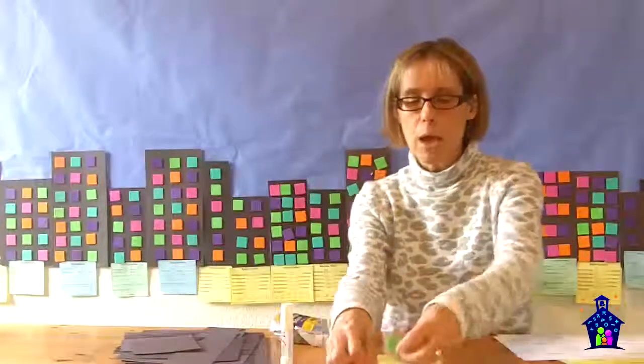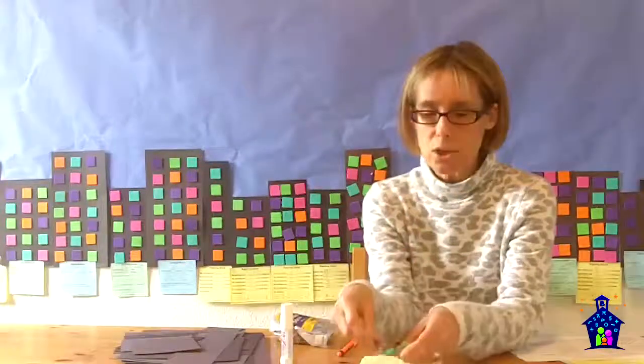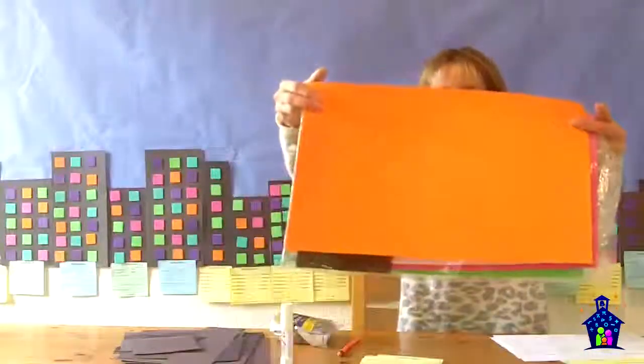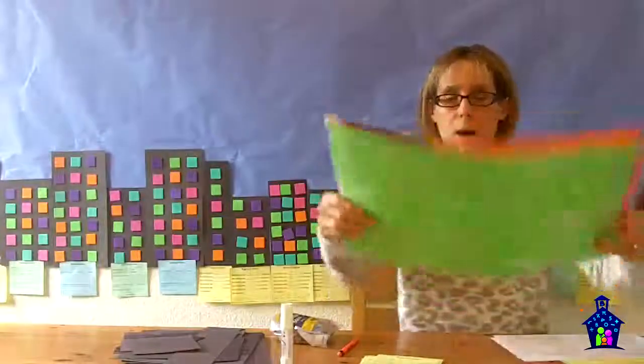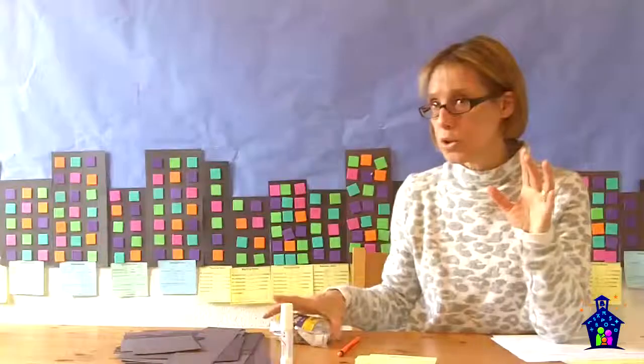What you're going to need for this project is a whole bunch of buildings or black construction paper cut into a variety of rectangular sizes. You're going to need glue sticks. You're going to need windows or colored squares. And what I did is I took these foam sheets that I bought at a craft store and used a die cut to cut out a whole bunch of these squares, but you don't need to do that. You can use colored construction paper or another thing that I discovered if you're doing this with older students.